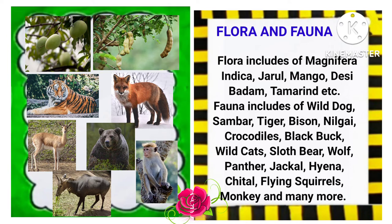Flora and Fauna: Flora includes Magnifera Indica, Jarul, Mango, Desi Badam, Tamarind, etc. Fauna includes Wild Dog, Sambar, Tiger, Bison, Neel Guy, Crocodiles, Black Buck, Wild Cats, Sleuth Deer, Wolf, Panther, Jackal, Hyena, Cheetal, Flying Squirrels, Monkey and many more. And here are some pictures of flora and fauna of Maharashtra state.